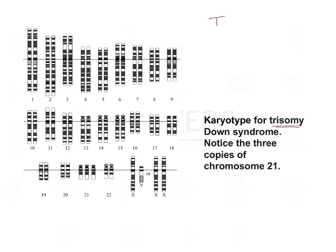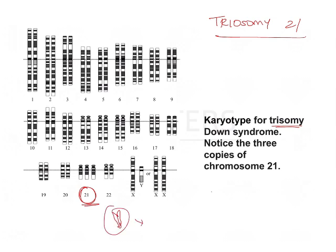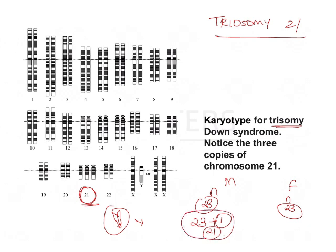Now in trisomy 21, sometimes there is non-disjunction of chromosome 21. So instead of breaking apart, the entire 2-set is present in the cell. Instead of getting N with 23 chromosomes from the mother or father, what we end up with is 23 plus one additional set of chromosome number 21 — so 46 plus one additional chromosome number 21. Chromosome number 21 is present in three sets, which is known as trisomy 21.